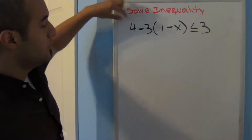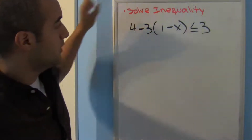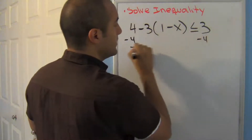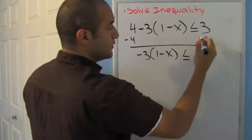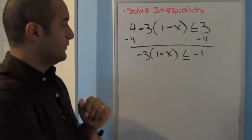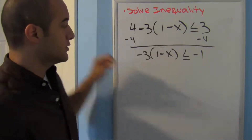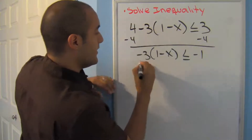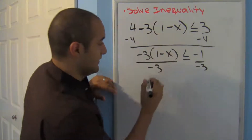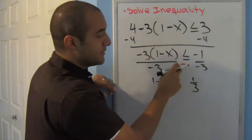Now let's try this one. Right now you technically only have two terms: the 4 and the negative 3 times the quantity 1 minus x. Since my x is in that term, I'll get rid of the 4 first by subtracting 4 from both sides, giving negative 3 times the quantity 1 minus x less than or equal to negative 1. I can divide by negative 3 on both sides instead of distributing, so I get 1 minus x.